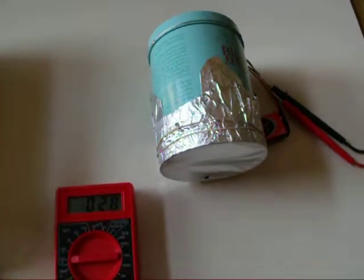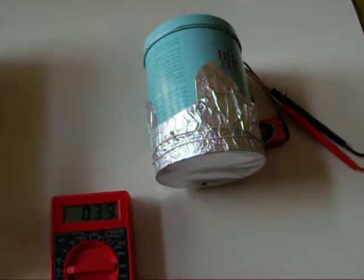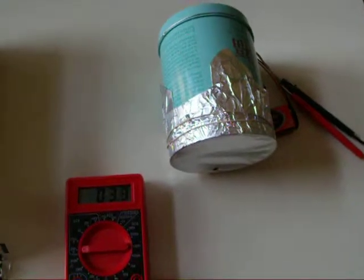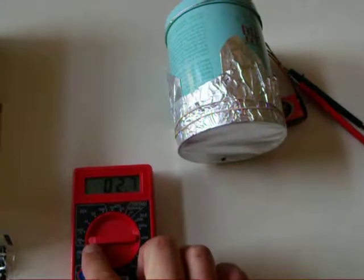So here we are, we've assembled and zeroed the ion chamber to where we'd like it to be. I have the meter in the 200 millivolt range.